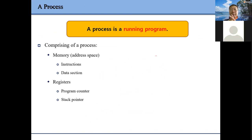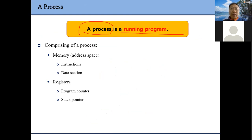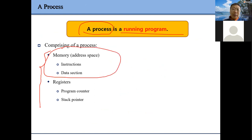Before we talk about how to share the CPU, let's look at what a process is. We already talked about processes, but now let's look at it from a kernel perspective. A process is a running program. We need memory — specifically, we need an address space.